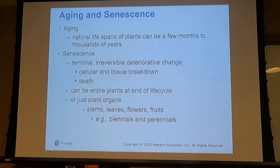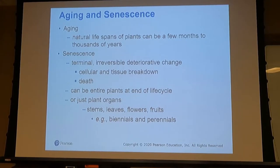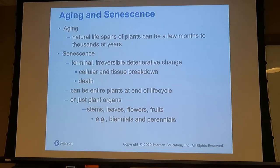Finally, plants age and senesce — when cellular tissue breaks down and can no longer support life for that growing season. It might be the entire plant at the end of its life cycle, or just the plant organs. During fall, trees go dormant and leaves senesce: shorter daylight changes the light intensity, which affects the photosynthetic rate, releasing anthocyanins — that's why you see leaves change color and eventually fall.